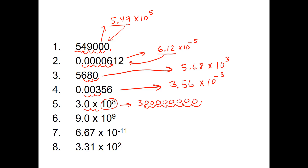Same thing here. I write down the 9, and I'm going to take that decimal place 9 spots: 1, 2, 3, 4, 5, 6, 7, 8, 9 — and that gives the same number. I can double-check by walking backwards 1, 2, 3, 4, 5, 6, 7, 8, 9, just to make sure I didn't make a mistake, and it is 9 spots away. So 9 times 10 to the 9th equals this number.